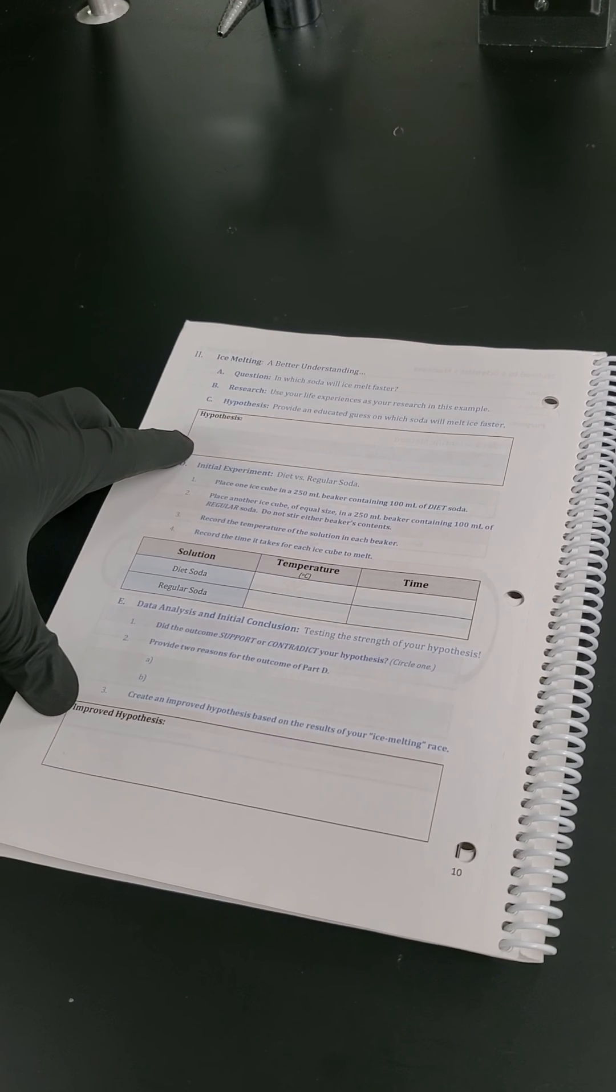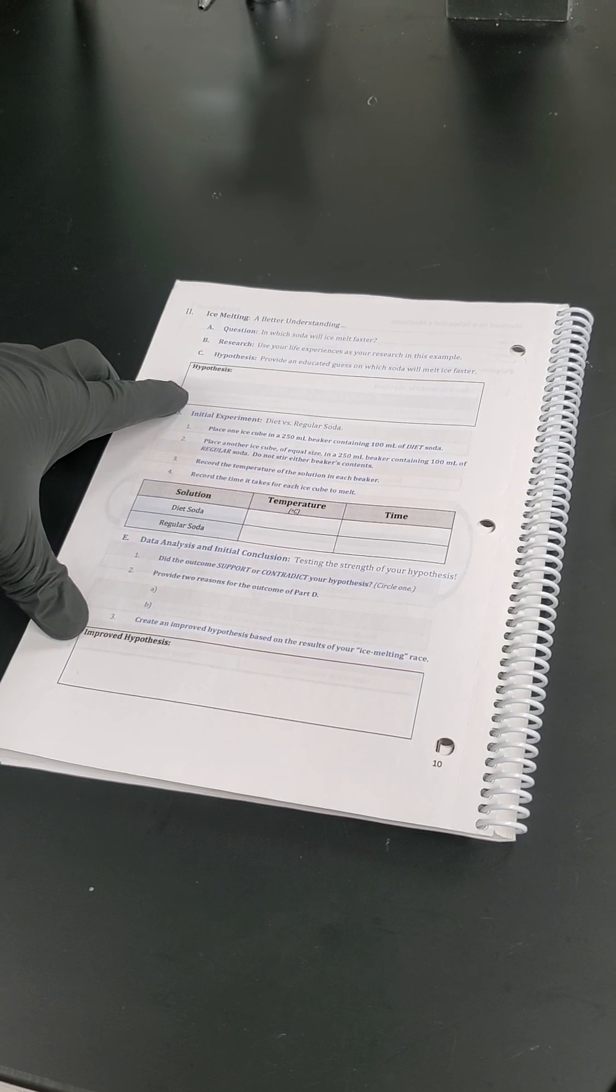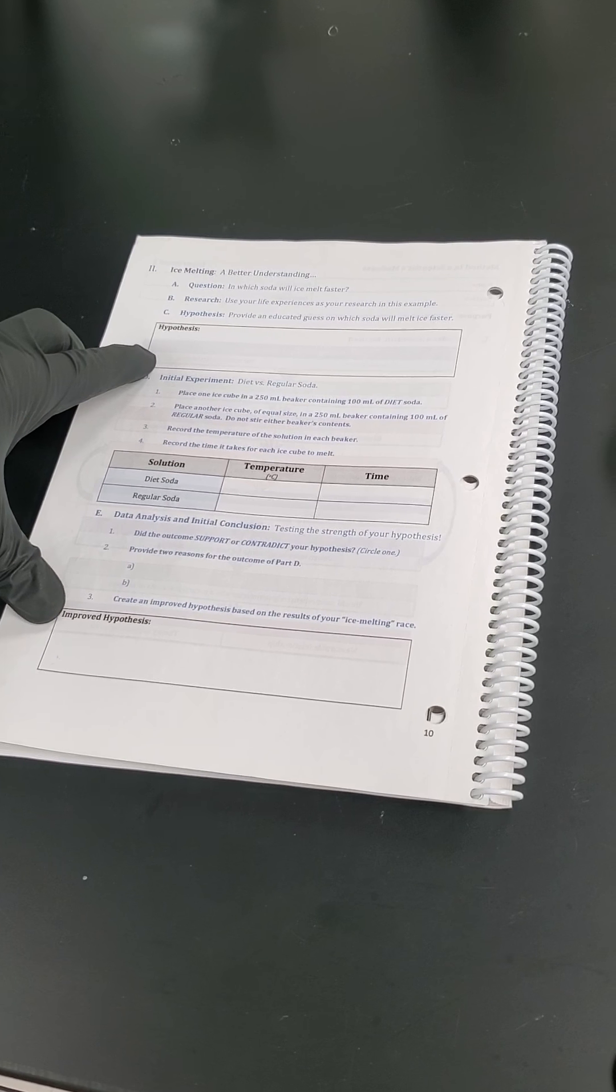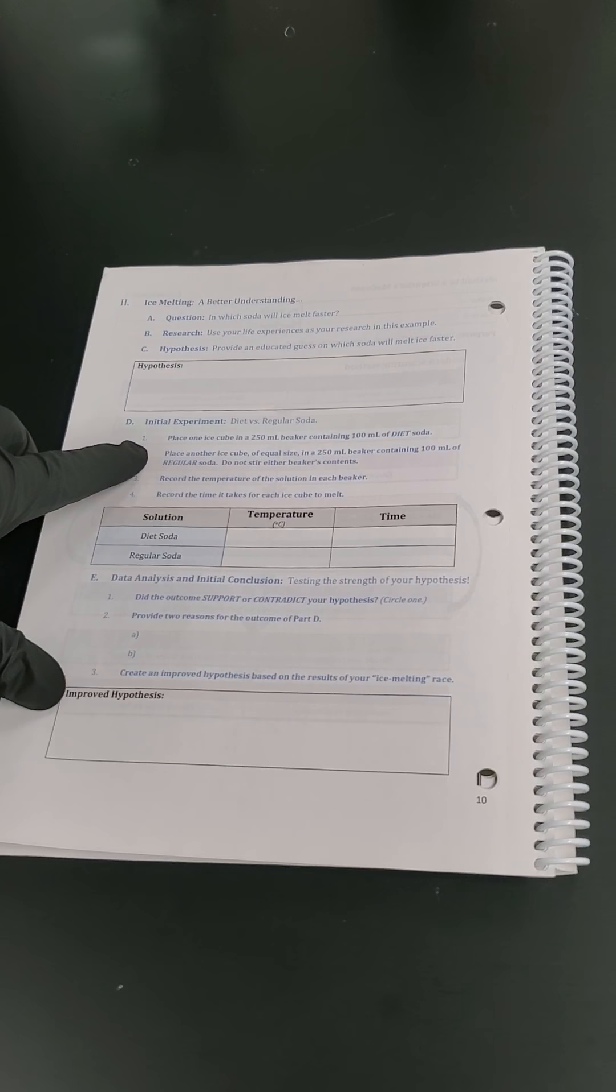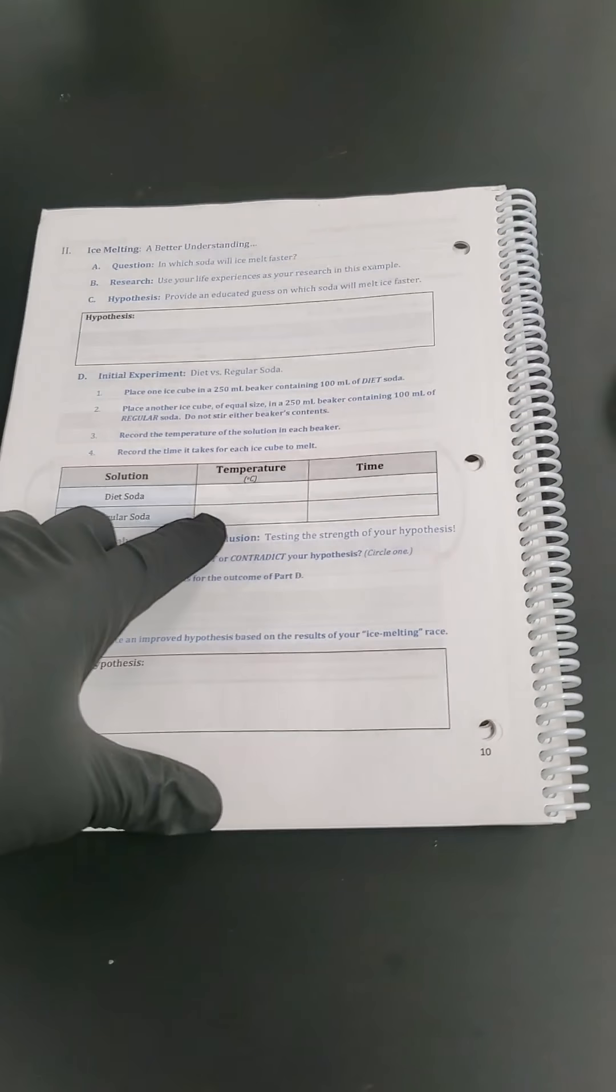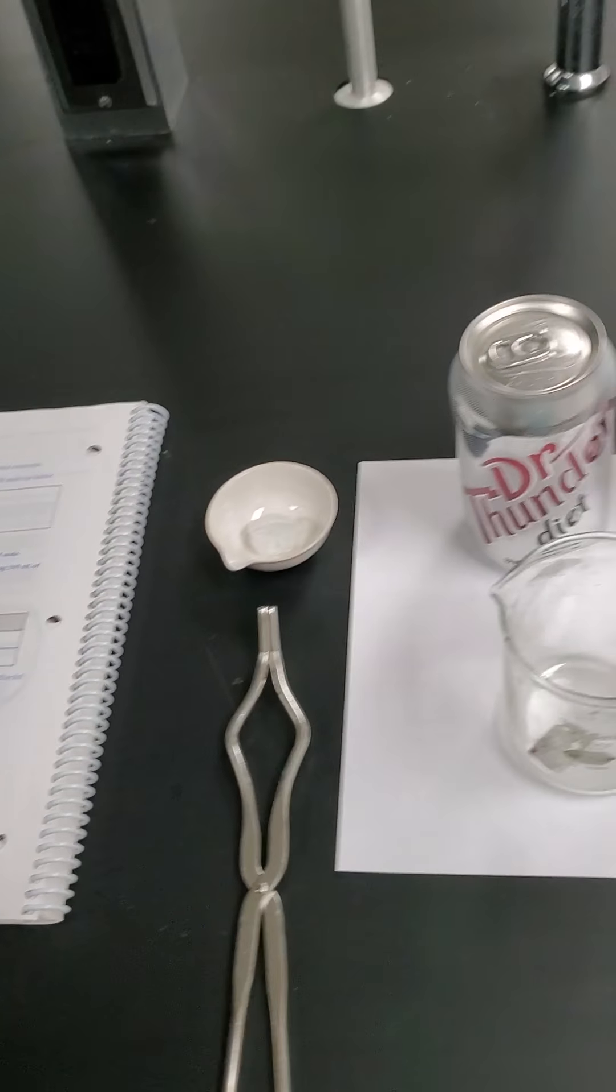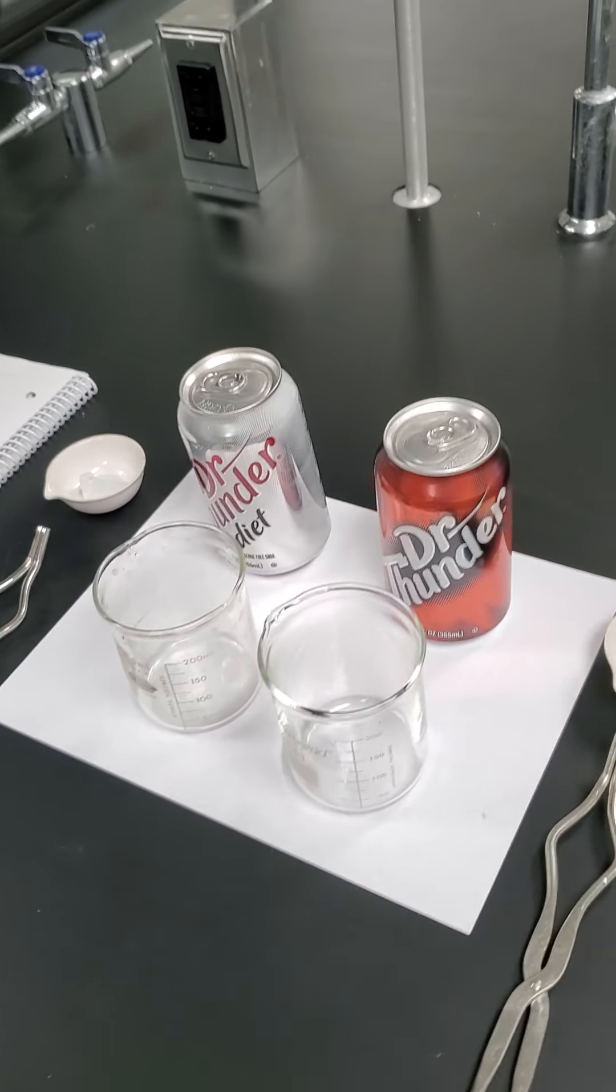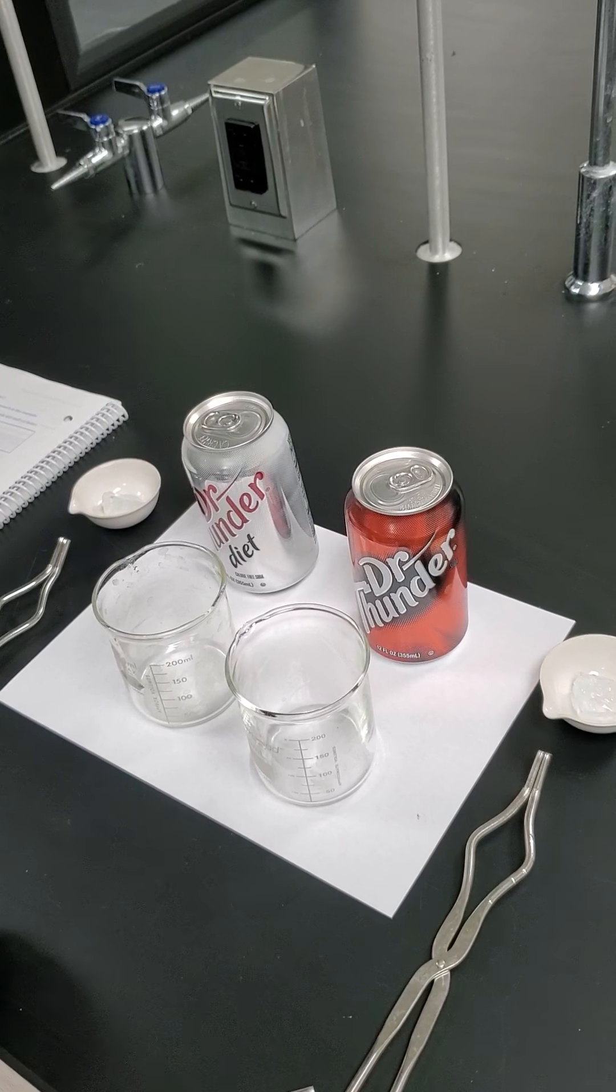Once you've picked a hypothesis, we might say that diet is going to melt faster because it has less sugar, or maybe the reverse idea where regular soda has more sugar. So now we need to test it. In order to test it, let's test a diet soda versus a regular soda. First, we need to get them to the same temperature. We have our experiment set up with our tongs, our two beakers and our two sodas.